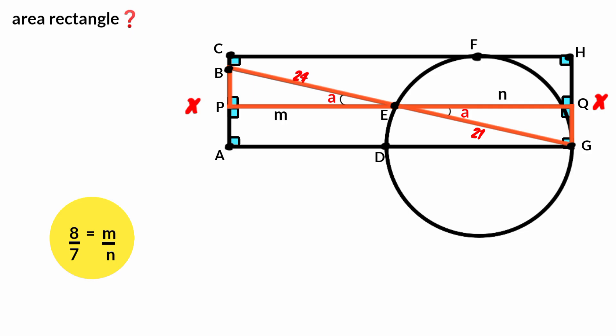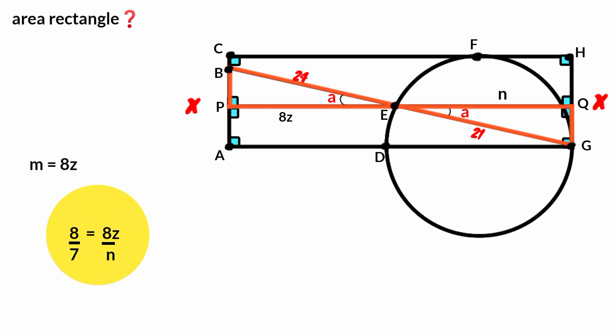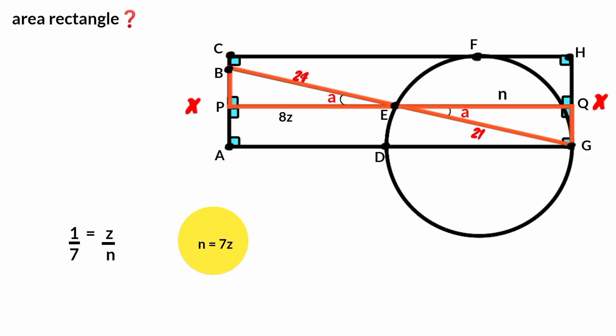Now let's assume M equals HC. Substitute it here, so 8 over 7 equals HC over N. The 8s cancel, giving 1 over 7 equals Z over N. Cross-multiplying: N equals 7Z. That is, this side is 7Z in length.